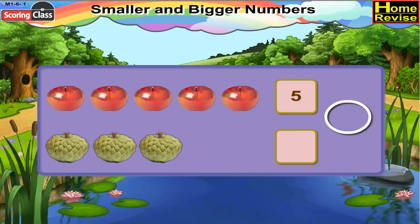Let's see how many custard apples there are. 1, 2, 3. So there are 3 custard apples. Okay, now you tell me — 3 is bigger or 5? You are right, it is 5. So write 5 in the circle.